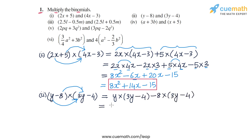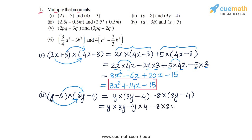Now y into 3y minus 4 is expanded again using the distributive law to give y into 3y minus y into 4. Then from the second product we get minus 8 into 3y and then minus 8 into 4.